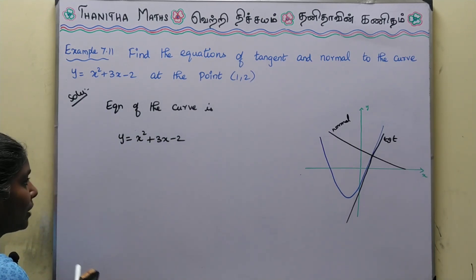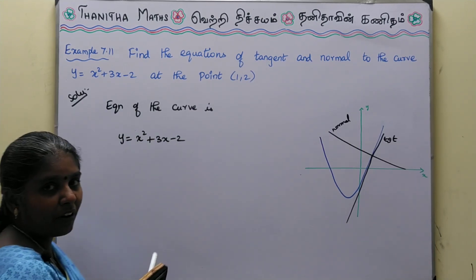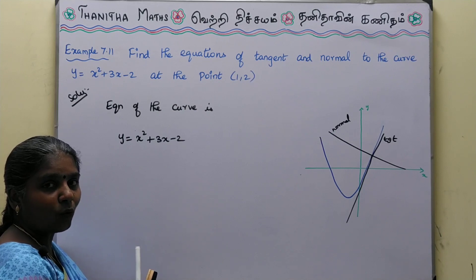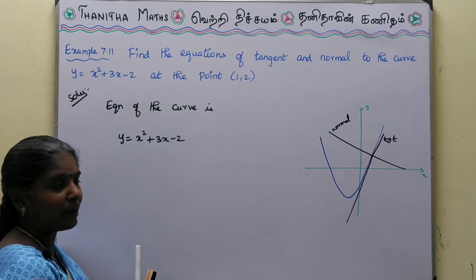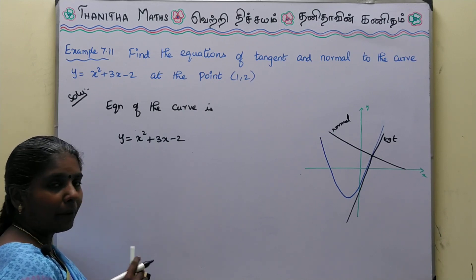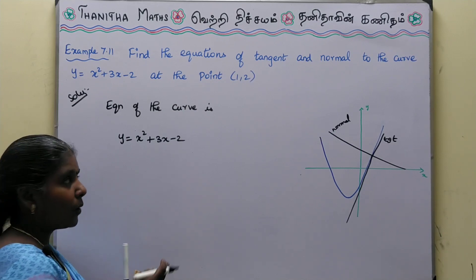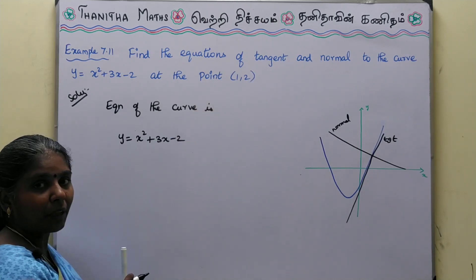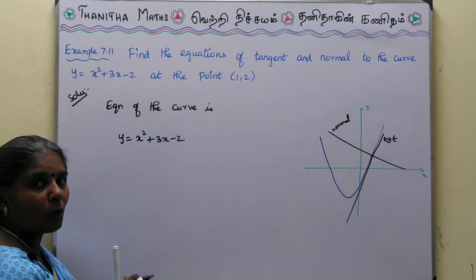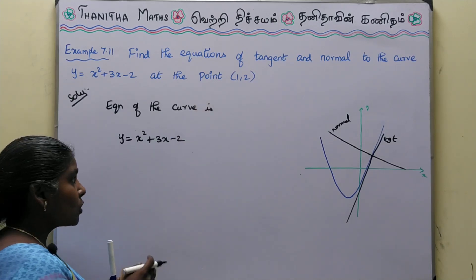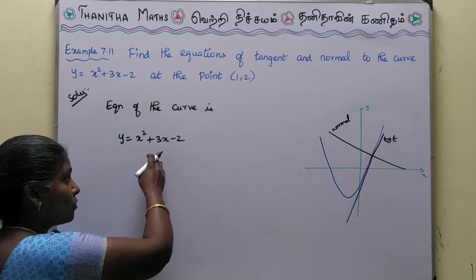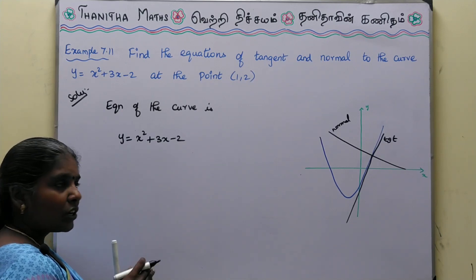Now looking at the equation of the tangent, as given in the introduction video, the equation of the tangent is y - y₁ = m(x - x₁). We know x₁, y₁ is equal to (1, 2). To find the slope m we need to differentiate the curve.